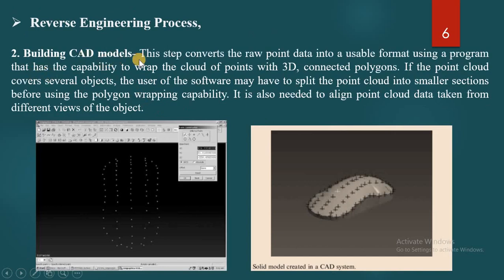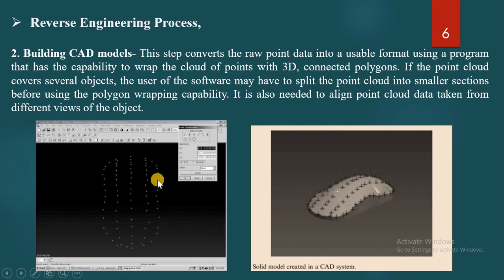The second step is Building the CAD Model. Once you have the coordinates of the object, you go for building the CAD model. This step converts the raw point data into a usable format using a program that can wrap the cloud points with a 3D surface. It is important to regularize the points into a definite object or shape. Sometimes coordinates are not properly arranged, so you must arrange them in a definite sequence. If the point cloud covers several objects, the user may have to split it into smaller sections.